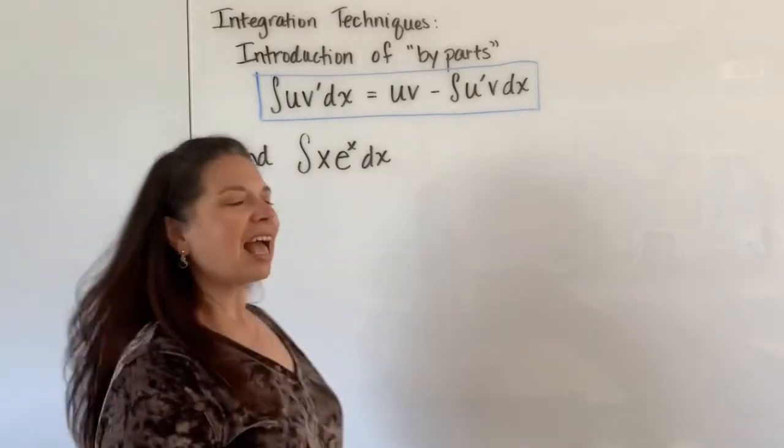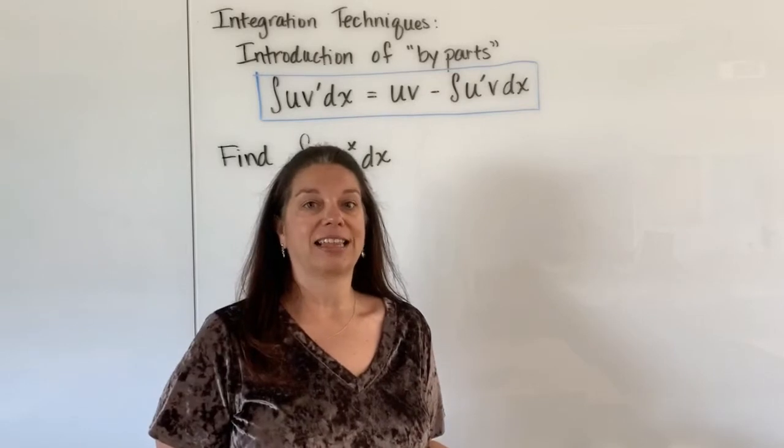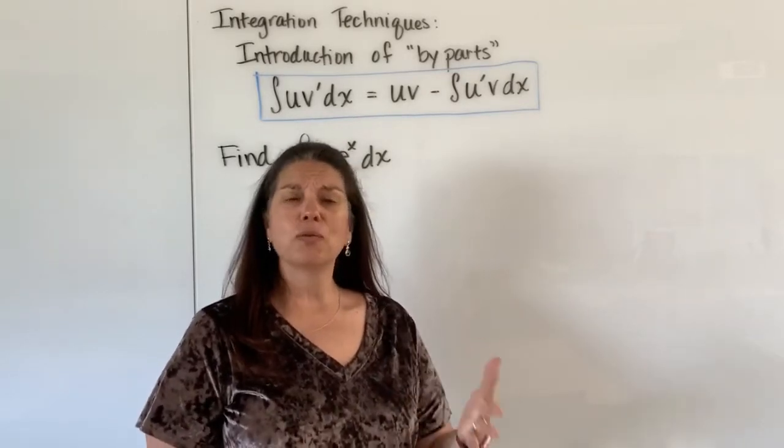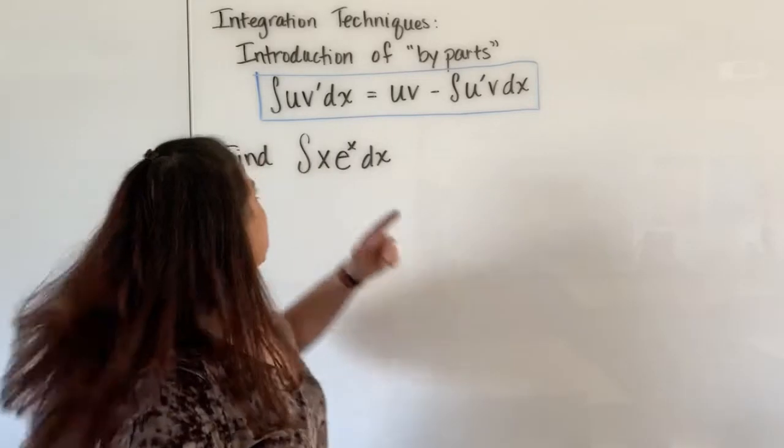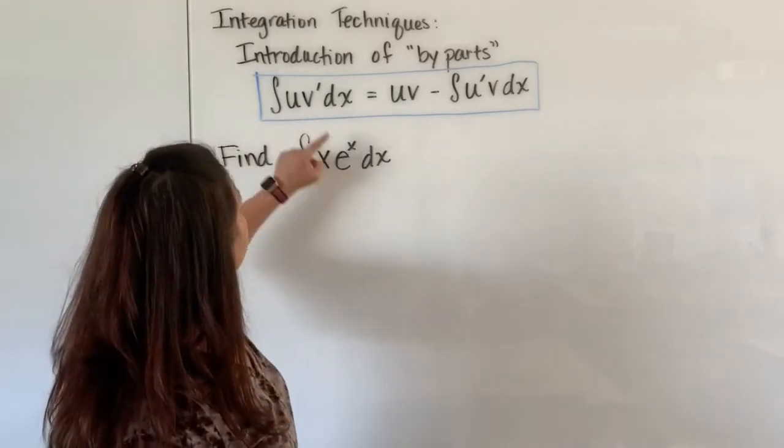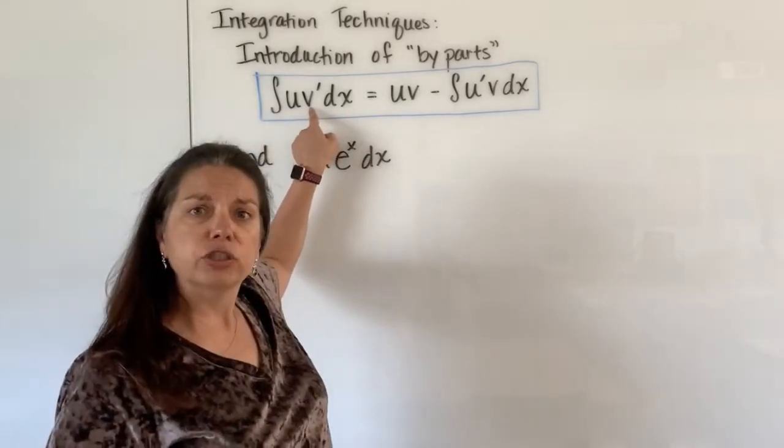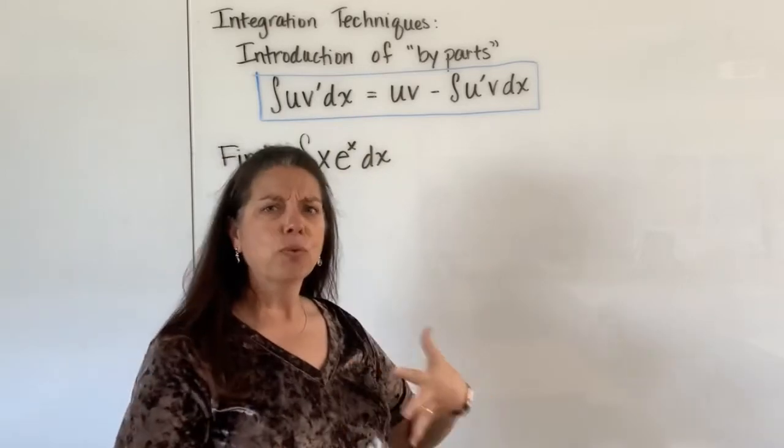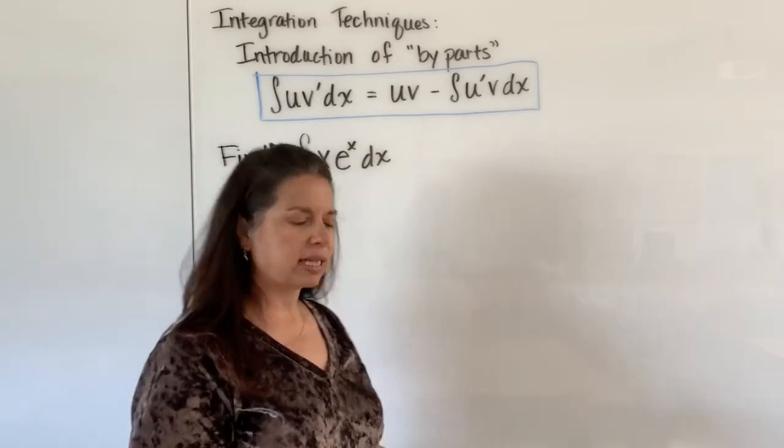Okay, so it actually works very similarly like the other problems where you still have to figure out what is the first function, let that be our u, and then connect up with the second function as your v prime and write that out just so that everything is nice and organized.